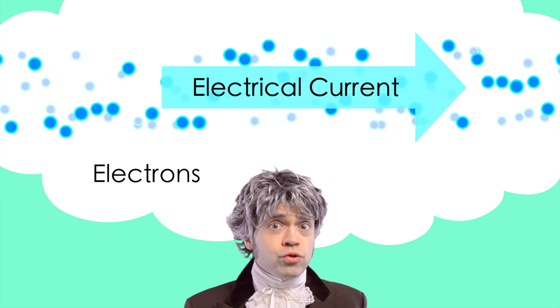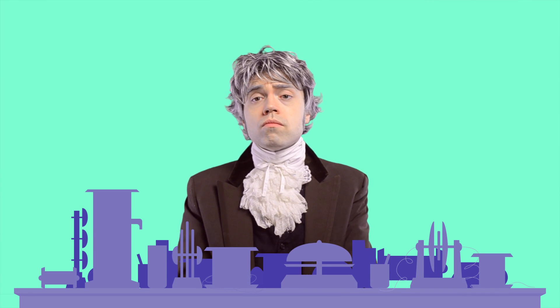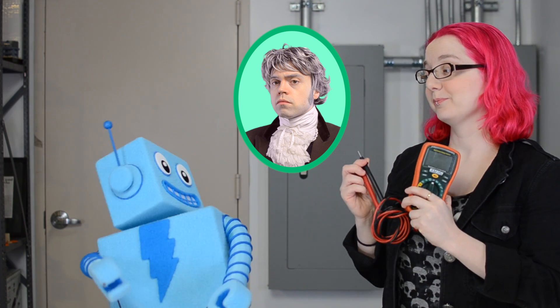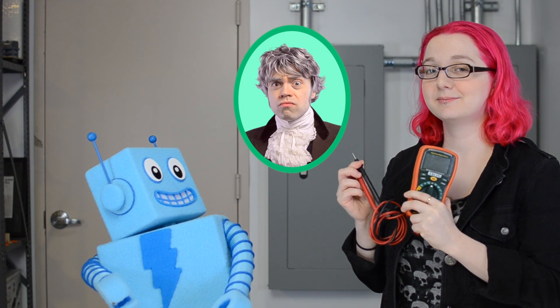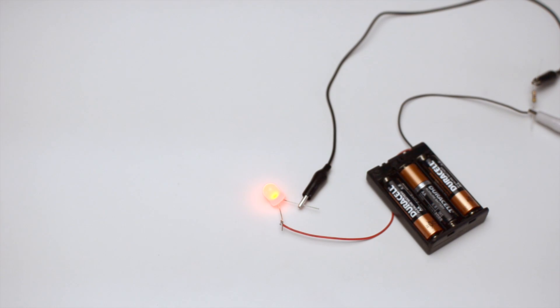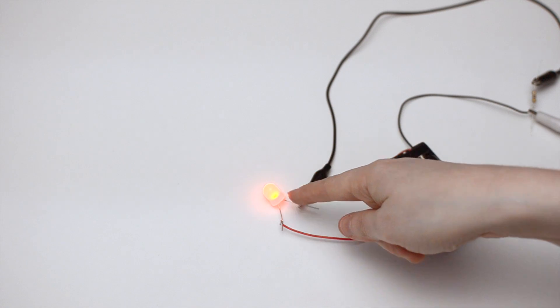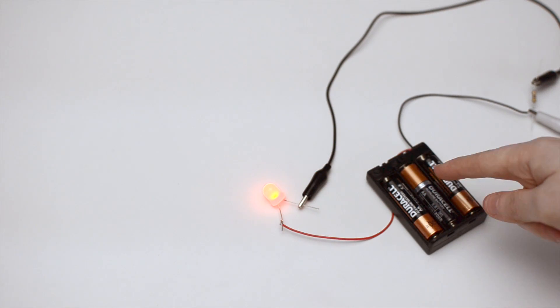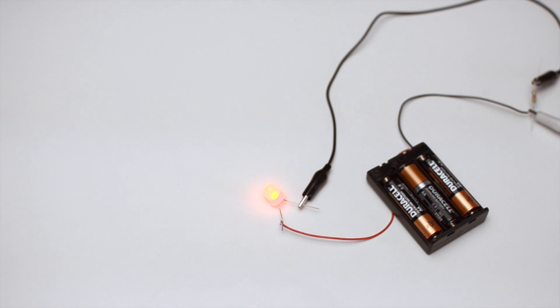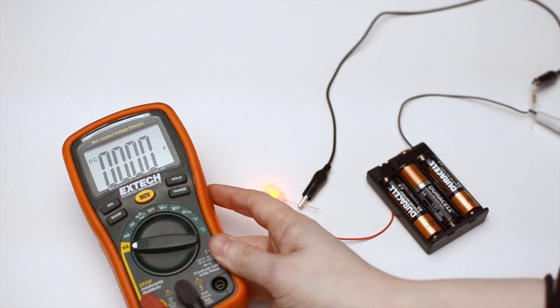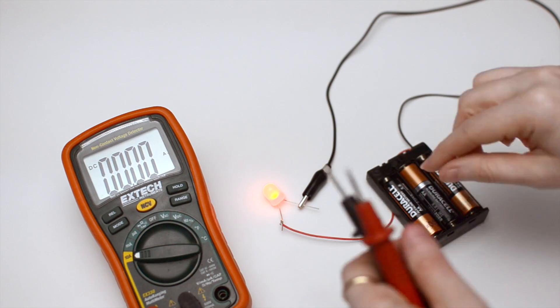Makes sense to me. Now I get it, Lady Aiden. But how do we measure amperes? That's easy — we use a multimeter. I wish I had one of those. In this circuit, electrons flow from one end of the battery, through the LED, and then back to the other end of the battery. By sending the current through a multimeter, we're able to measure the amount of electrons flowing through.